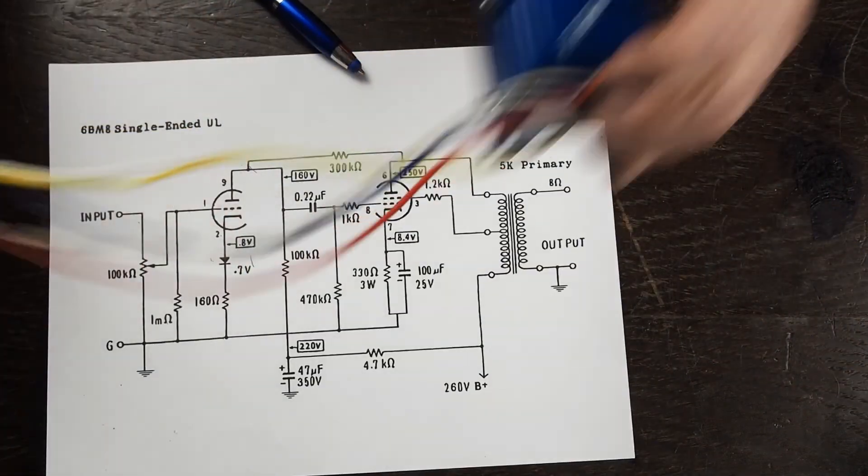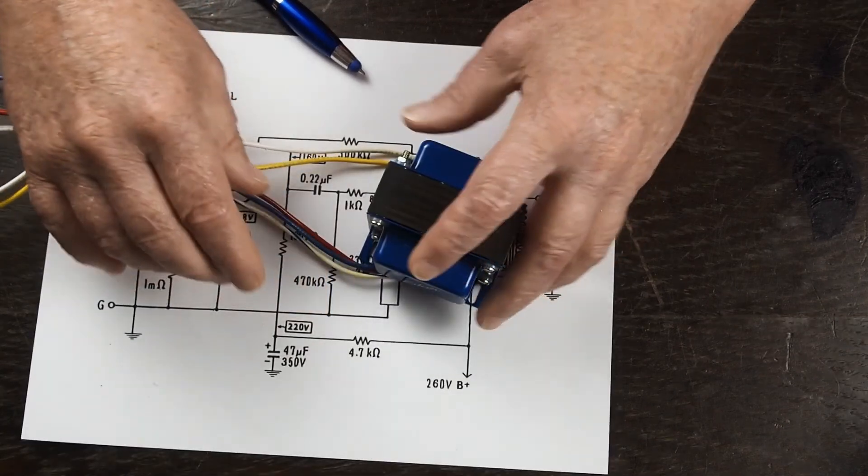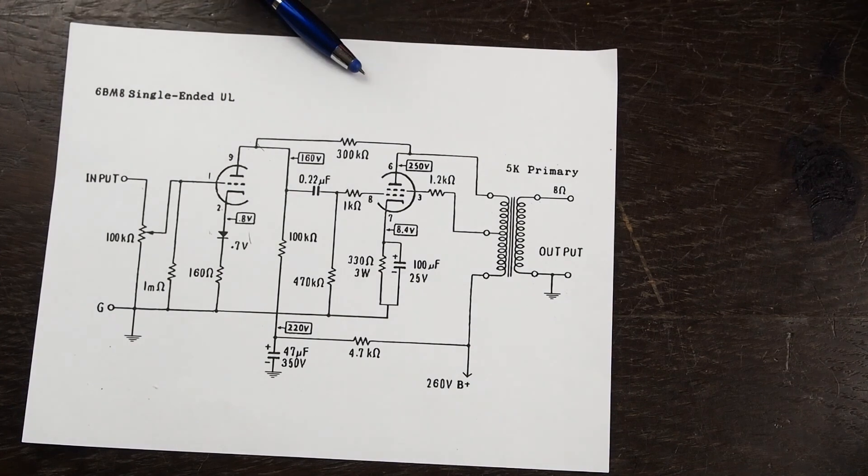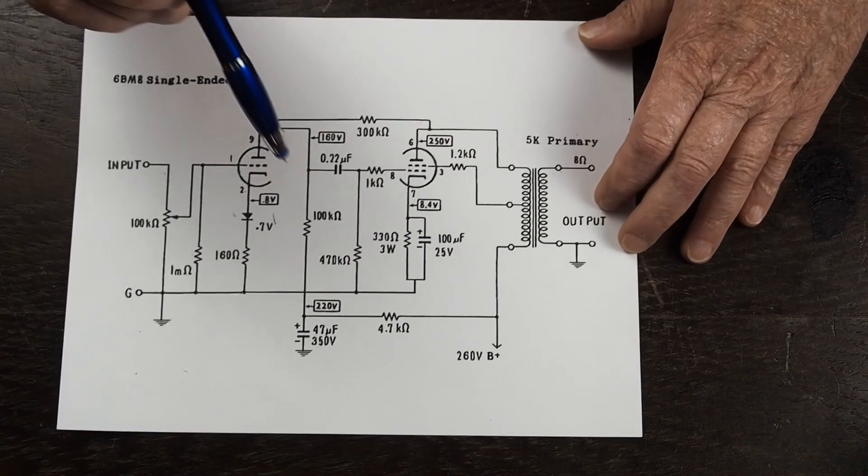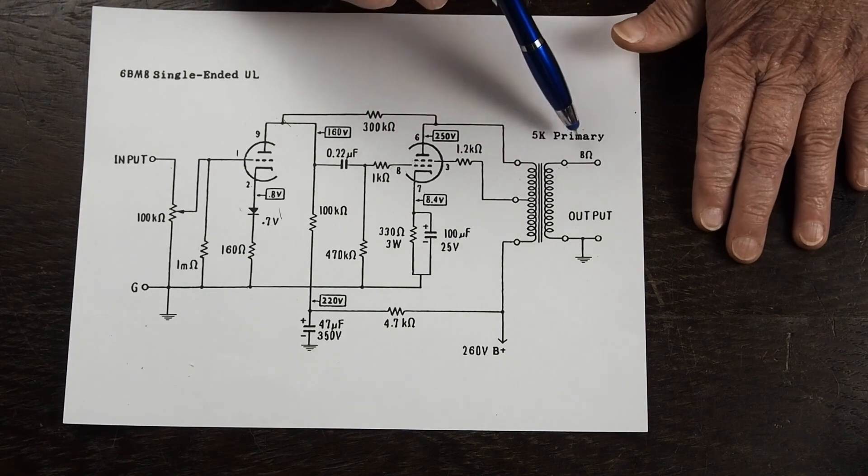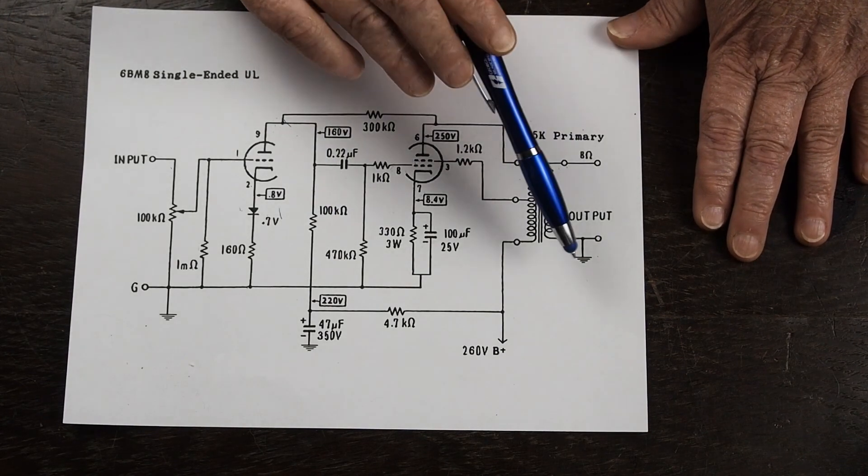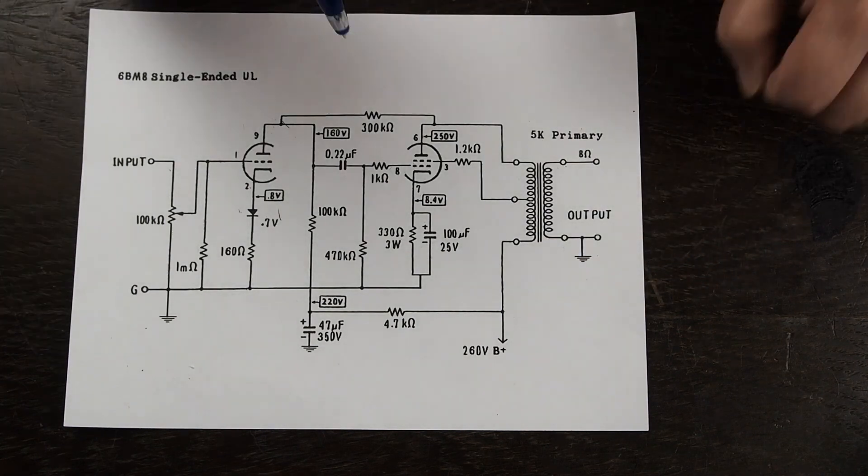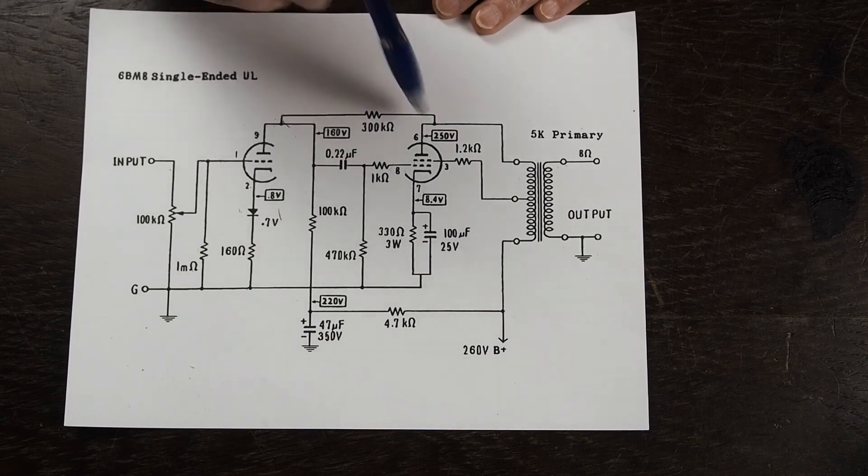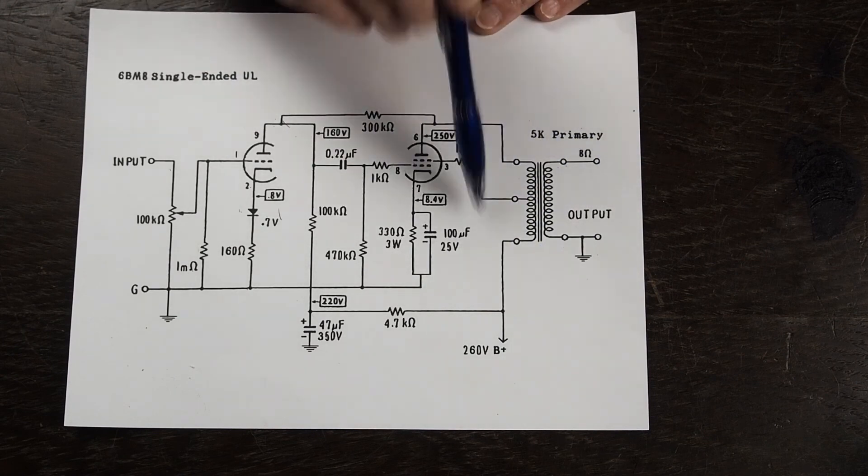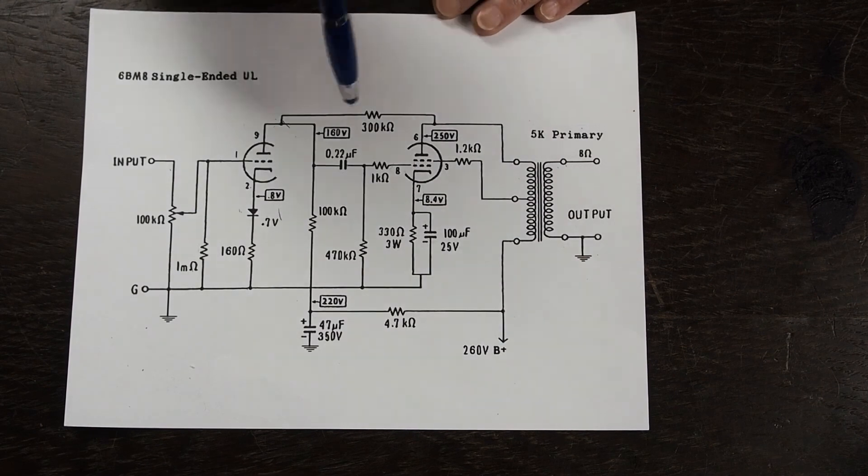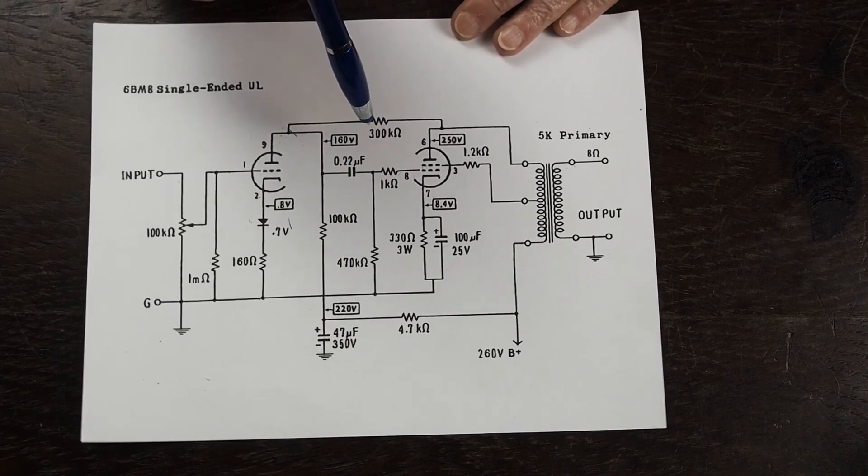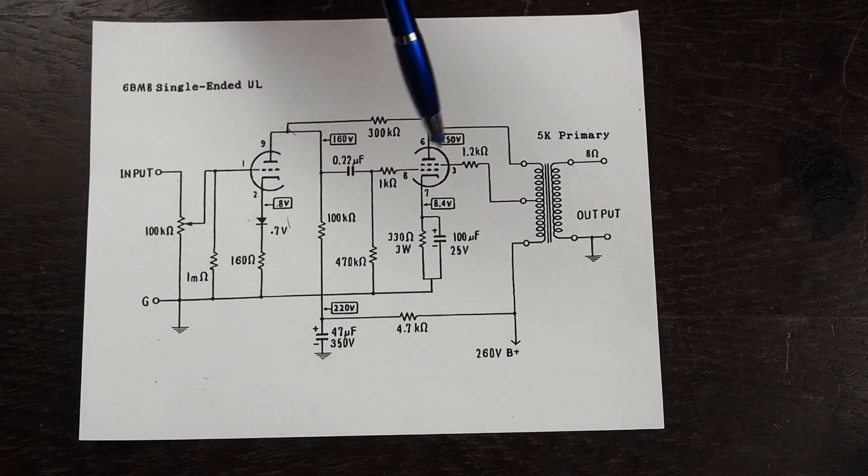That resistor capacitor network has to be adjusted for each type of transformer so if you don't use this exact edcore transformer that I'm using and you decide to use a cheaper brand or a different manufacturer then the step network that's set up for this transformer wouldn't work in your circuit. This is pretty universal because it's not involved with the output transformer itself and it seems to work really well.